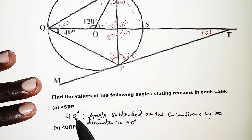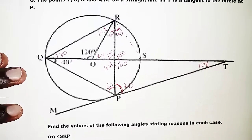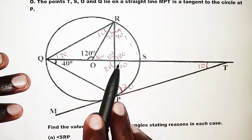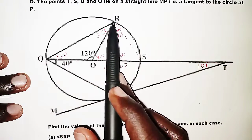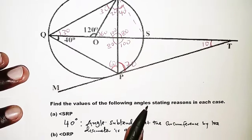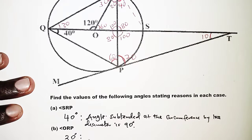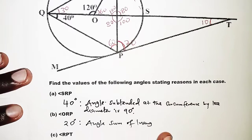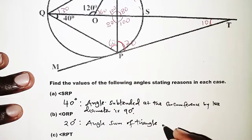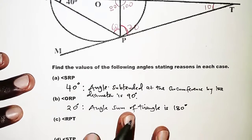For part B, angle ORP: we found this to be 20°. The reason is that the angle sum of a triangle is 180°.